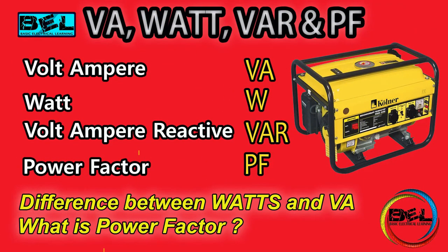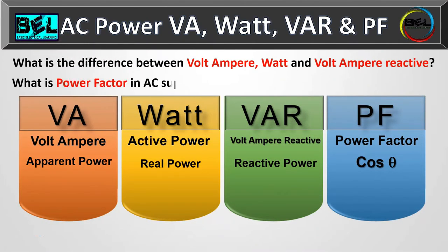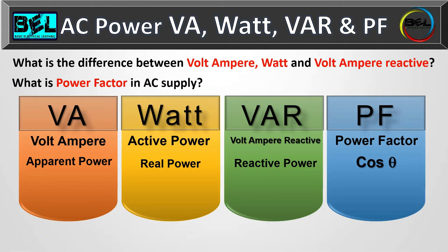Hello, welcome to my channel Basic Electrical Learning. Today's topic is AC power. In this lesson we will discuss the difference between watts and volt ampere. There are three types of AC power: volt ampere, which is known as apparent power; watt, also known as active power or real power; and VAR, which is volt ampere reactive, known as wattless power. At the end we will study about power factor, which is cos theta.